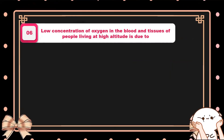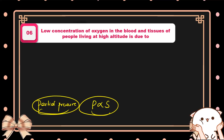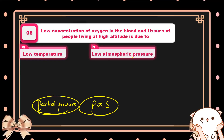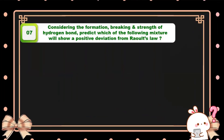Question number six: low concentration of oxygen in people living at higher altitudes. At high altitudes, partial pressure of gases is low. According to Henry's law, pressure is directly proportional to solubility — lower pressure means lower solubility. That is why at high altitudes people feel headache, nausea, and vomiting sensation: less pressure means less solubility of gases like oxygen in our blood.